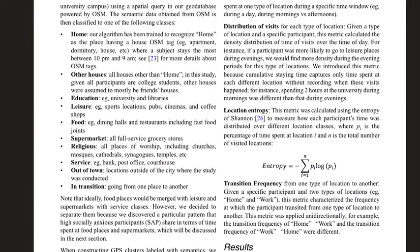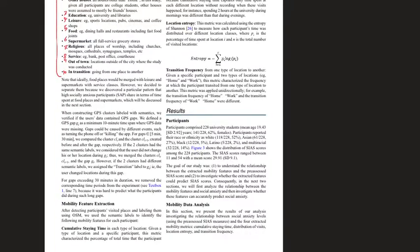The authors categorized semantic locations into 10 location types, and describe additional details such as how they handle time gaps caused by the application being killed in the background.